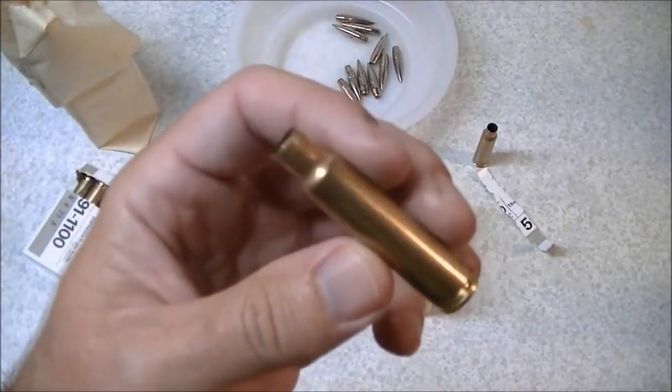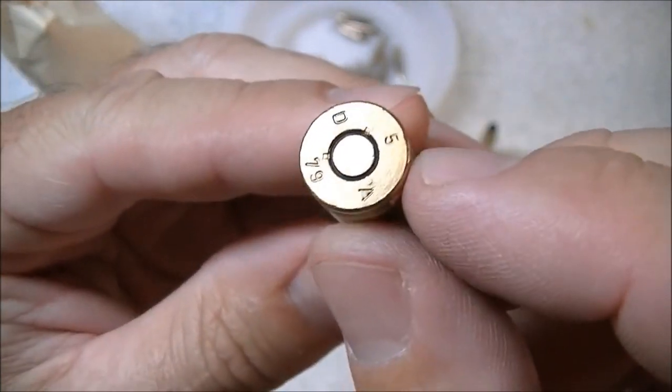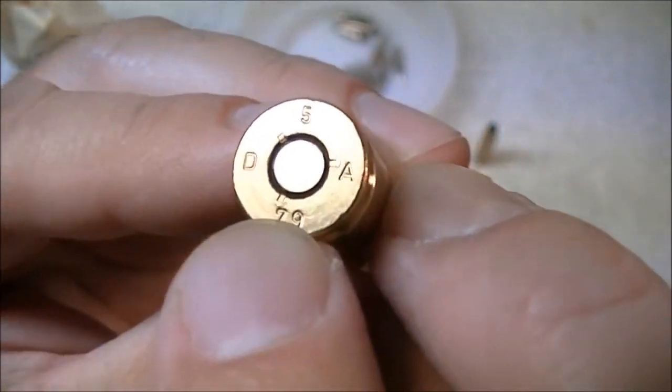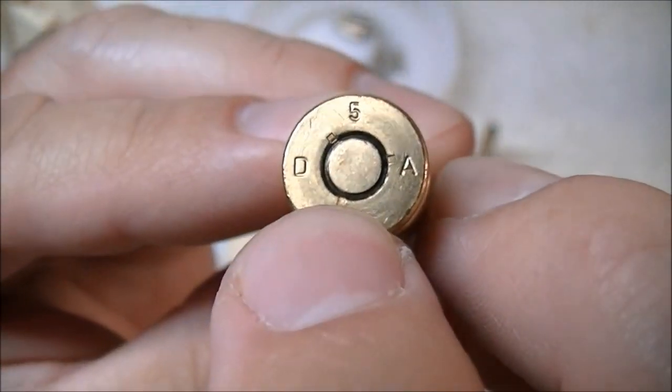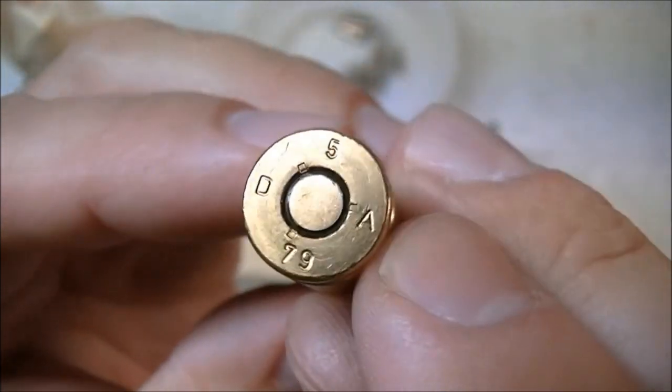We'll have a look at the cartridge case. These, of course, are a brass cartridge case. We had a look at the headstamp before, but you'll also note that there are three very small indentations right above my fingernail there. You can see one there, one there, and one there. And those are crimps to keep the primer in place for use in semi-auto or full-auto firearms.